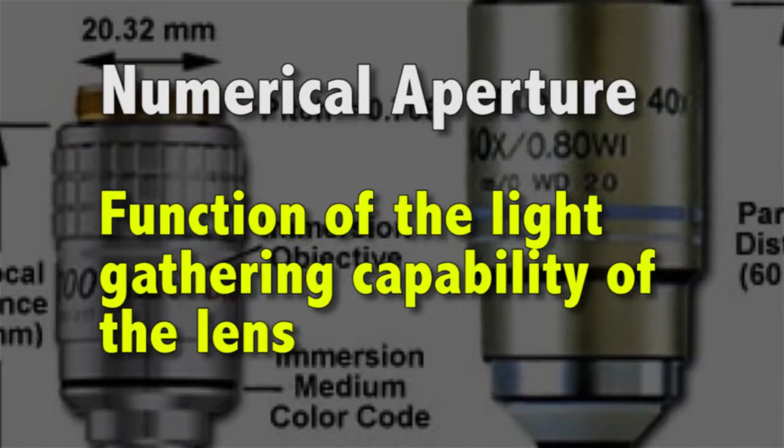Another important feature we discussed previously was numerical aperture. Remember that numerical aperture is a function of the light-gathering capability of the lens. It's the strength of the objective at bringing light into the optical path to resolve your image.